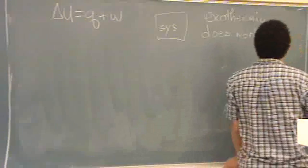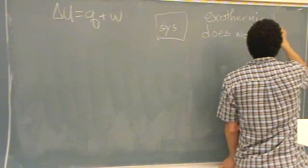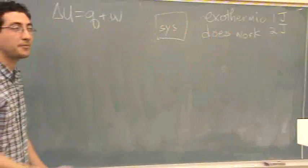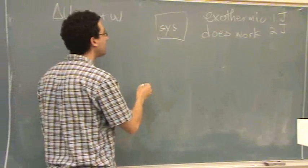And we'll just pick random numbers, one and two joules, to go with each of them. Okay. You can make up problems all by yourself if you wanted to.